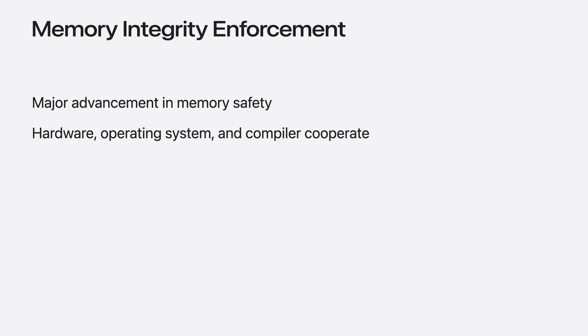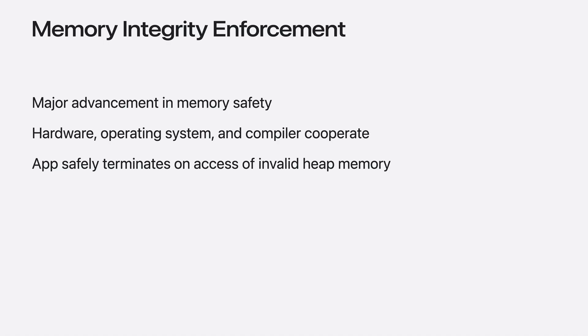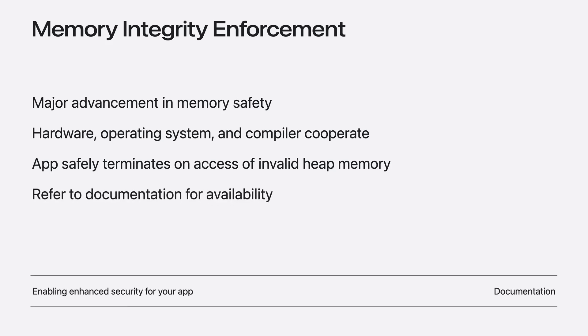Memory Integrity Enforcement is a new technology that makes it very difficult for attackers to exploit memory corruption bugs. It is a major advancement in memory safety where the hardware, the operating system, and the compiler all work together to prevent access to invalid memory by safely aborting program execution. The first supported devices are iPhone 17, iPhone Air, iPhone 17 Pro, and Pro Max. Check out Enabling Enhanced Security for your app to learn which other Apple devices are supported.